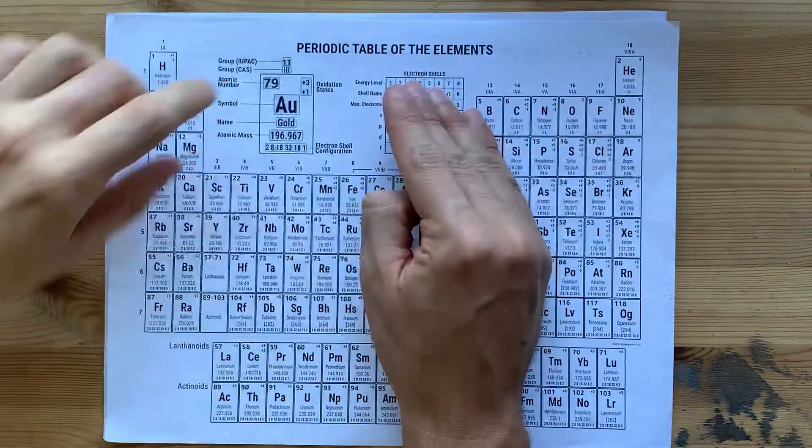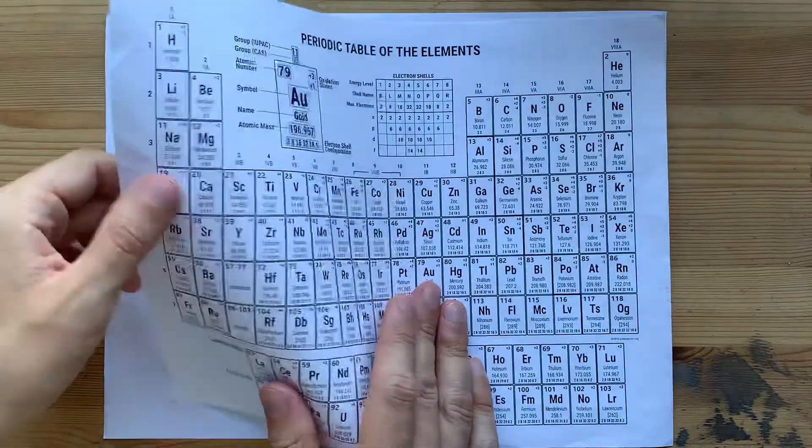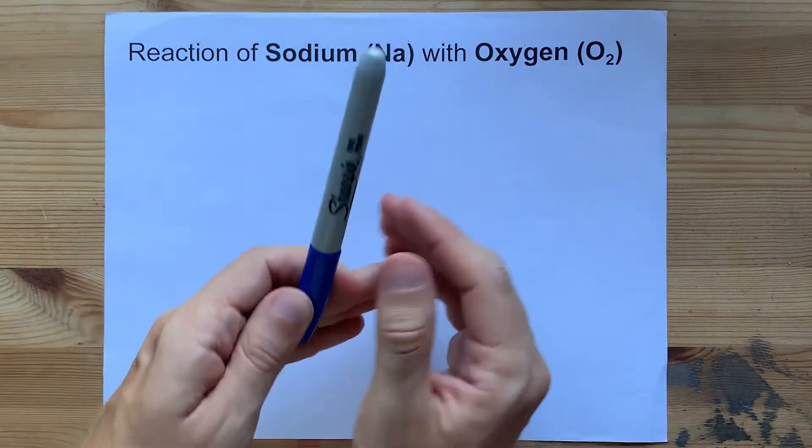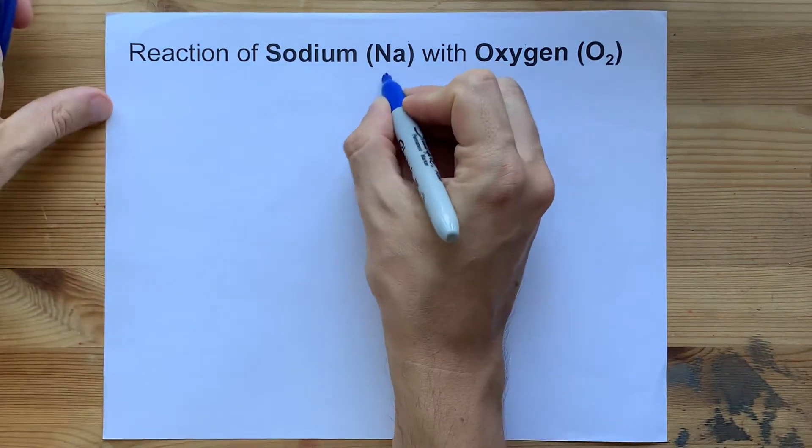And oxygen is a non-metal. I know that because it comes from the right side of the periodic table. Generally, when a metal and a non-metal combine, they form an ionic compound.